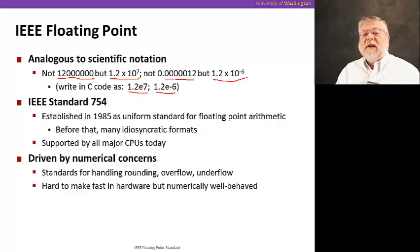All right, this goes back to IEEE standard 754, which was established in 1985 as a uniform standard for floating point arithmetic. Before that, there were all kinds of different formats that were very difficult to combine. But today's CPUs all use this same standard.